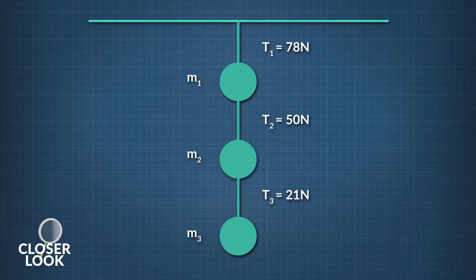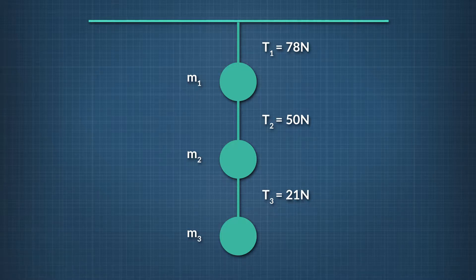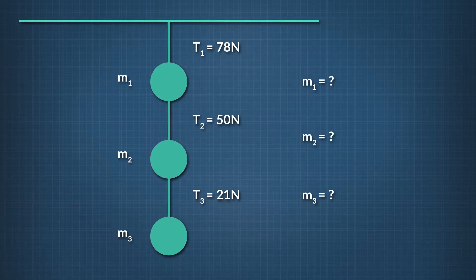Three unknown masses, m1, m2, and m3, hang together on thin wires. If the wires have no mass and the tension in the string at each point is given as shown, then what are the masses of these objects? From looking at this diagram, we see that the tension force in the top wire, T1, supports all the masses. T2 supports the masses m2 and m3, and T3 supports m3 only.